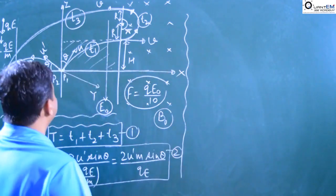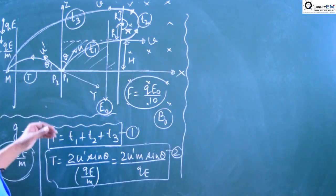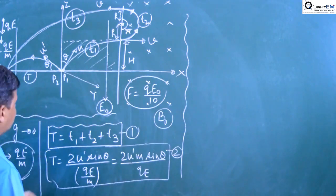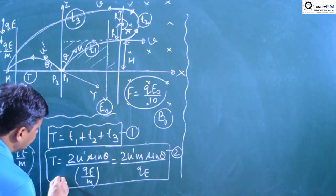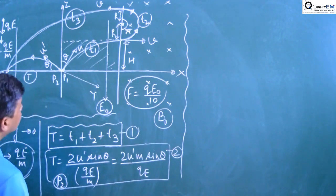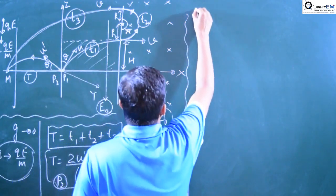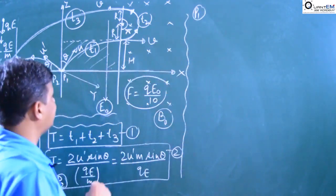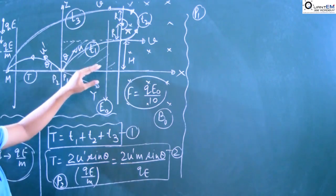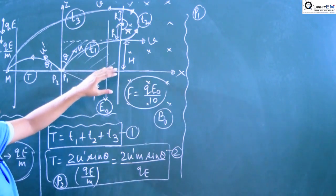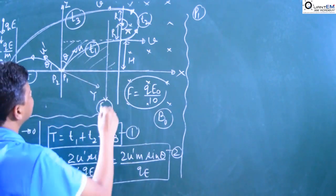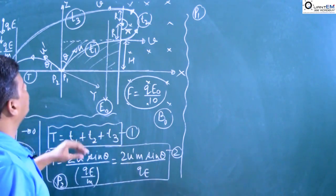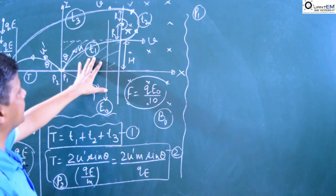Now we come to the next part — for projectile P1. That was for P2; now for P1. Projectile P1 first acquires maximum height with air resistance present. So up to the maximum height, we calculate the time t1.